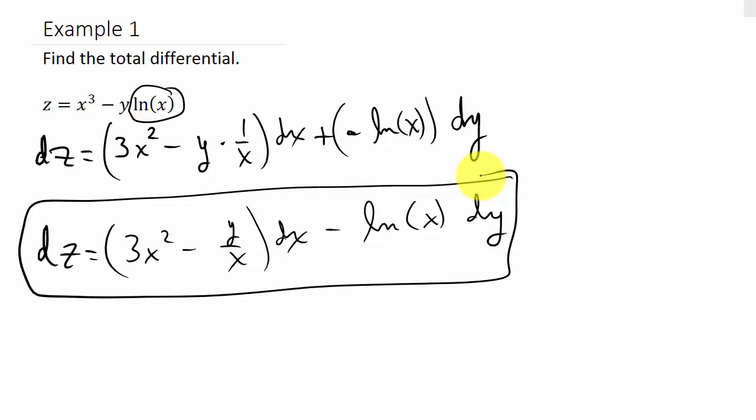So dz equals 3x squared minus y over x, dx, minus natural log x, dy. And that would be your total differential. You could simplify this and get a common denominator if you wanted to, but it's not really necessary.